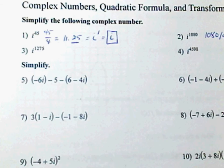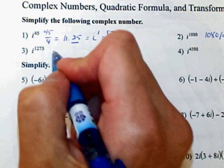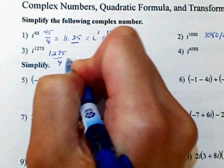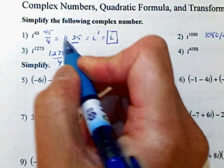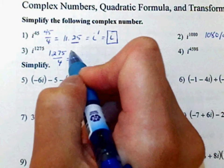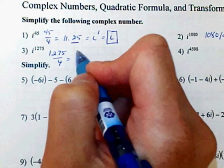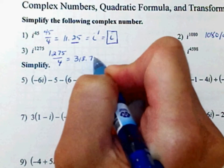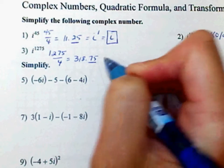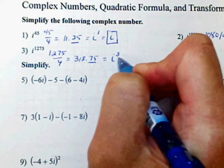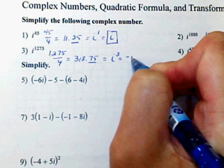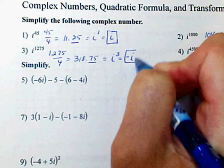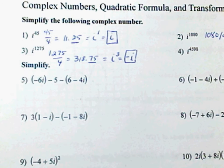Number 3, you continue to do the same thing. 1275 divided by 4 gives you 318.75. Notice that's like 3 quarters, which is the same thing as i to the 3rd, which is negative i — a pure imaginary number.